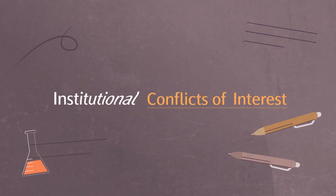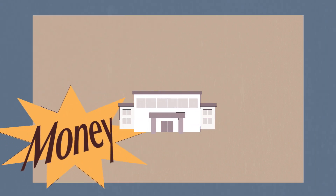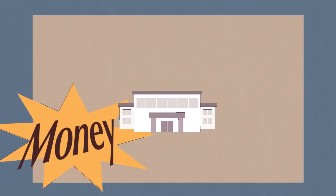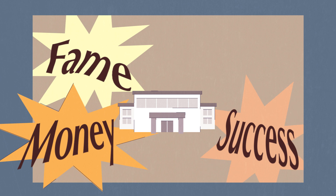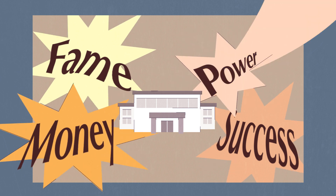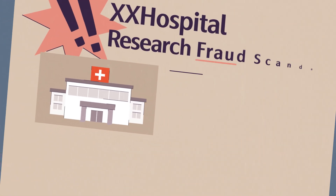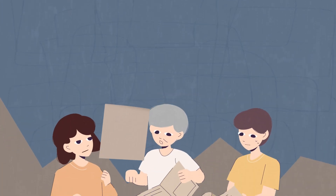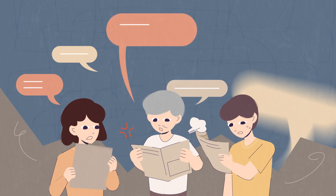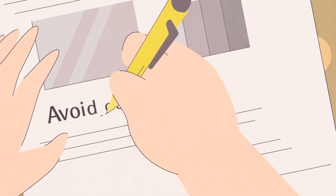Institutional Conflicts of Interest. When institutions face economic or outside pressure that violates professional or ethical courtesy, there will be a conflict of interest. For example, when a hospital has a conflict of interest, it may make medical research less objective, and the public may lose their trust towards medicine.